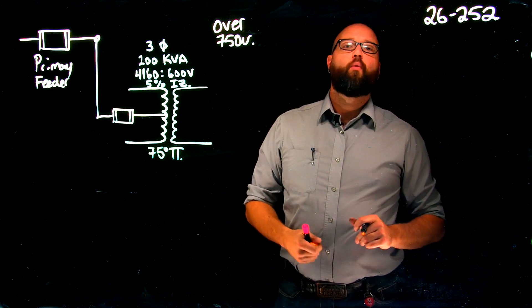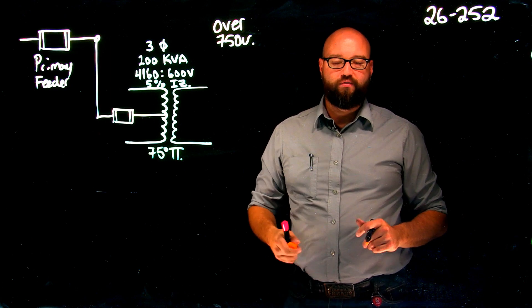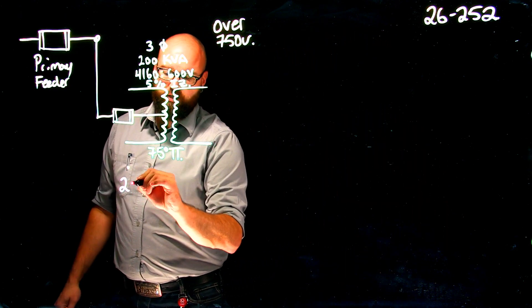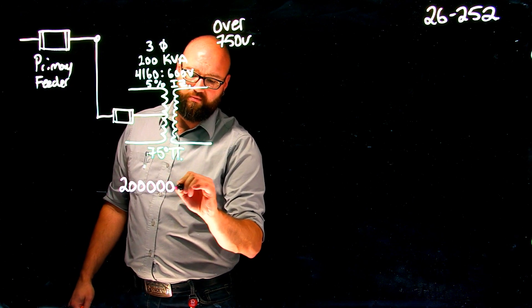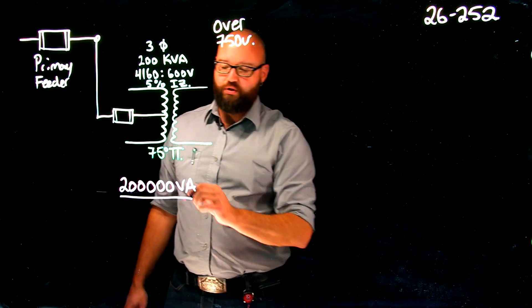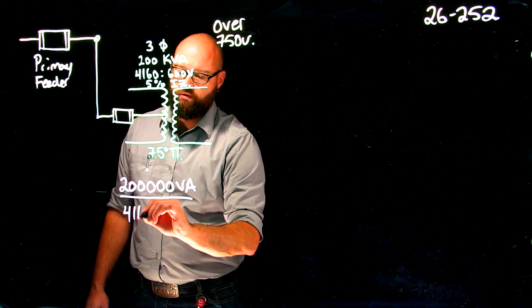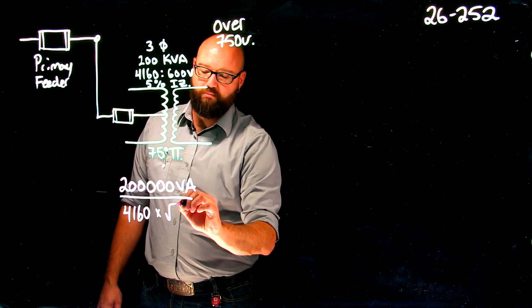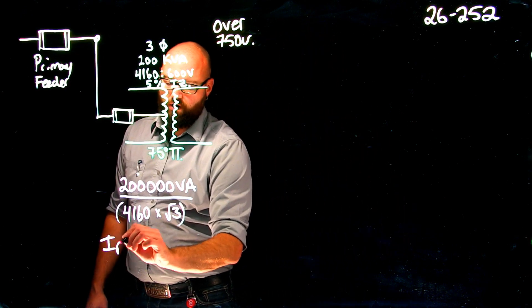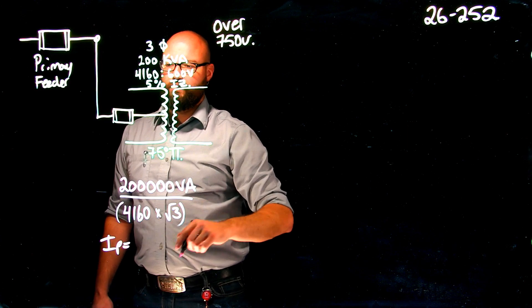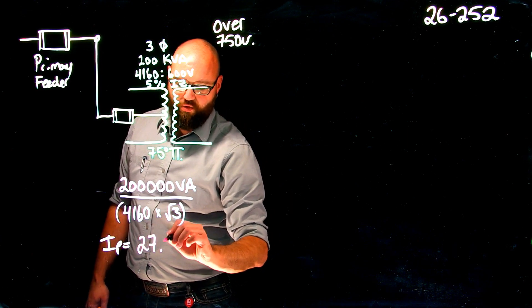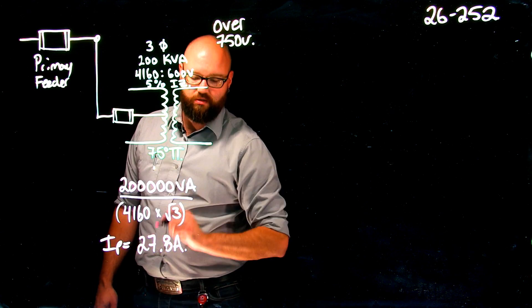First thing we need to figure out, what is the primary rated current on our transformer? As always, we're going to take our kVA, in this case 200,000 VA, divided by my line voltage of 4160 times root three, because this is a three phase transformer, gives me a rated primary current of around 27.8 amps.